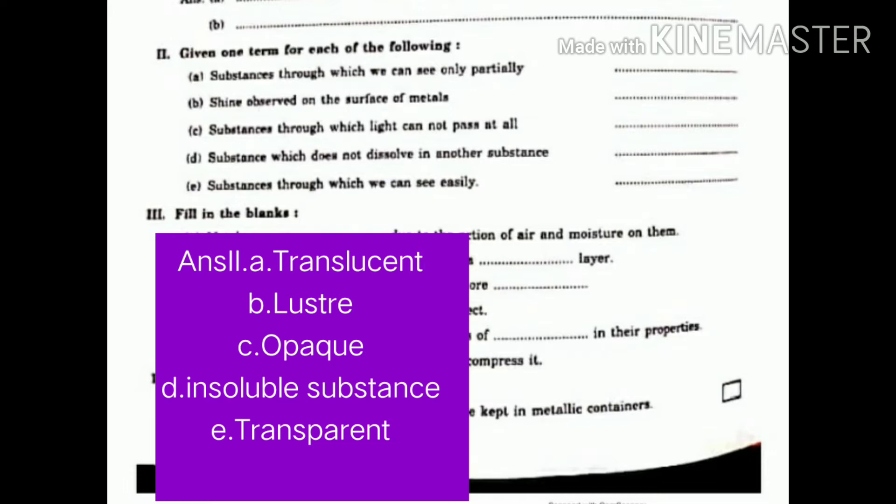C. Substances through which light cannot pass at all. Answer. Opaque. D. Substances which does not dissolve in another substance. Insoluble substance. E. Substances through which we can see easily. Answer. Transparent.